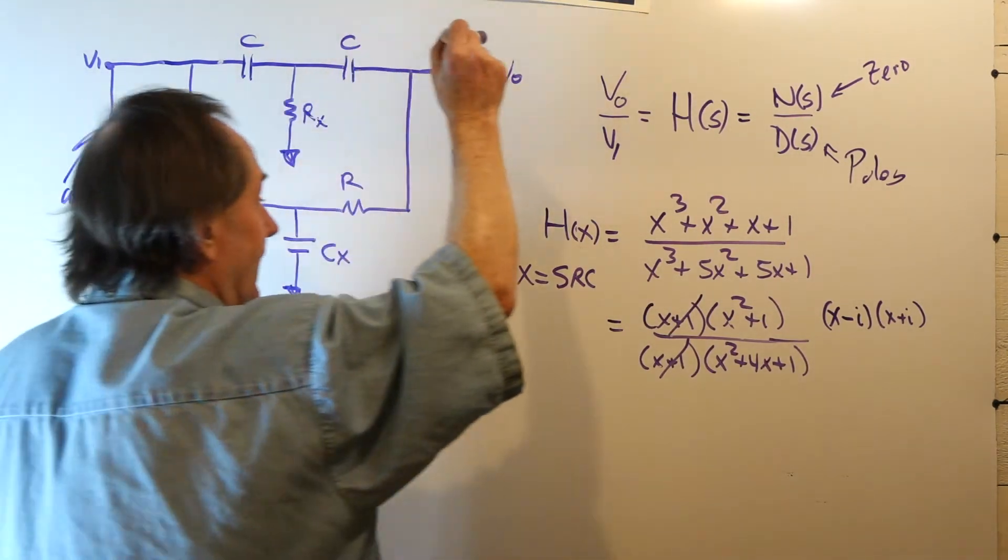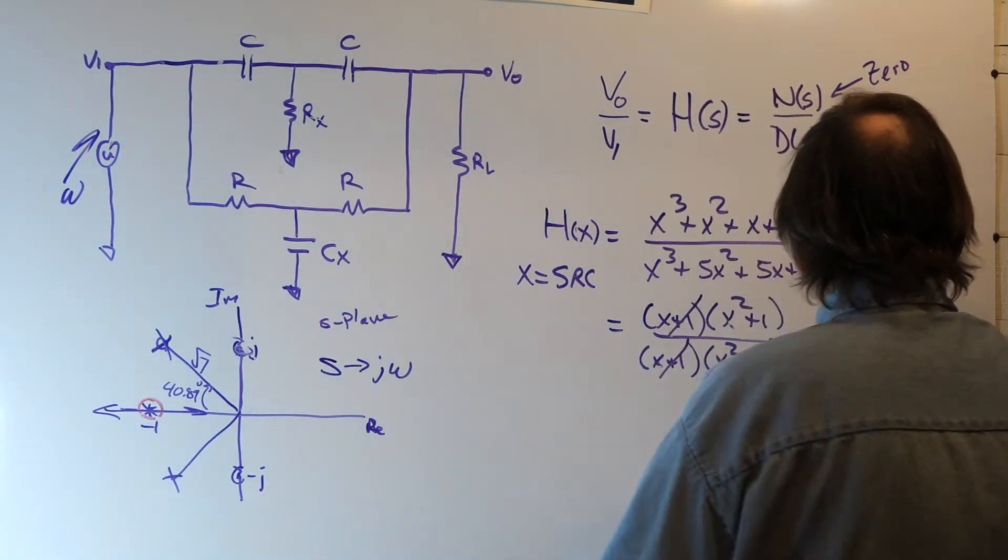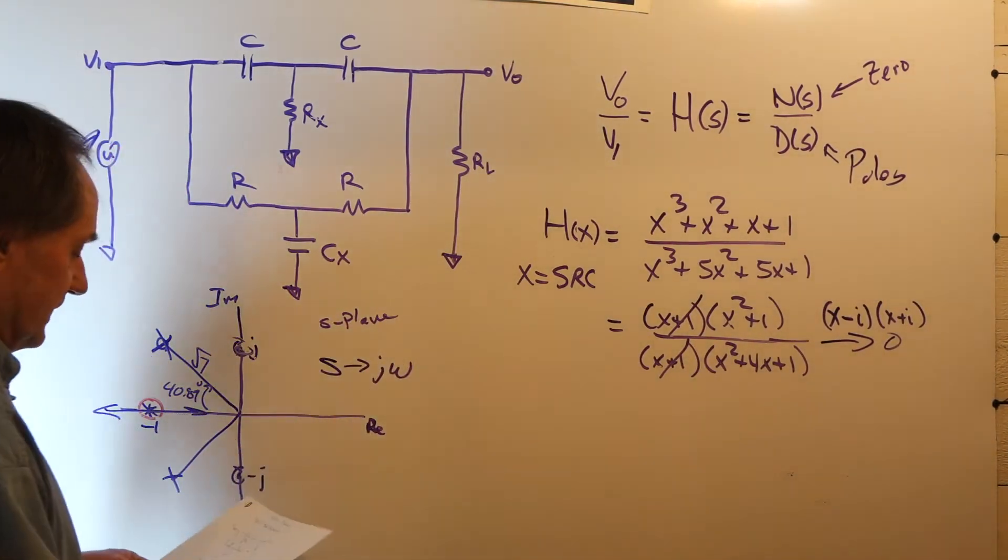Now, so what you have to do is solve for this transfer function in order to find the relationship on RX and CX so that this response goes to zero. You want that response to go to zero, and you need to determine that.